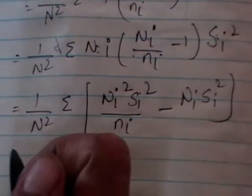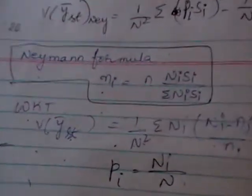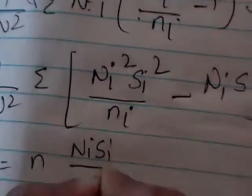To get this under optimum allocation, we use the Neyman formula: ni is equal to n times NiSi divided by Sigma NiSi. Substituting ni in place of ni, we get 1 by N-square times Sigma Ni-square Si-square divided by this Neyman expression for ni.